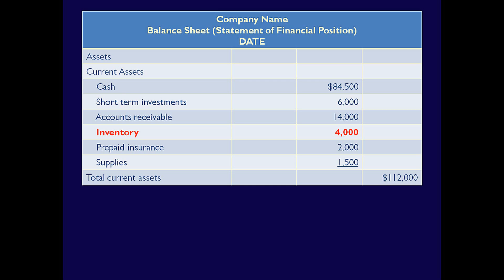Inventory is purchased in advance. It has future benefit for the company because we're going to sell it in the future to generate revenue. When we sell it, it becomes an expense called cost of goods sold or cost of sales. So it matches the characteristics of a prepaid expense. Prepaid insurance we know is a prepaid expense because it has the word prepaid in it. Remember, if you ever see the word prepaid connected to any account, you need to recognize that it must be recorded as an asset until it is used up. We already talked about how supplies is a prepaid expense, so let's move on to non-current assets.